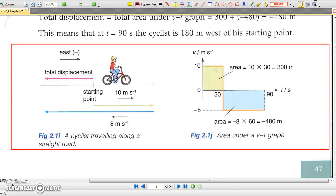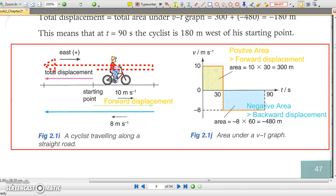If, on the other hand, the velocity is positive sometimes and negative sometimes, the area under the time axis should be taken as negative. In figure 2.1i, the cyclist goes right first and then goes left. The first displacement is positive, which points to the right, and the second displacement is negative, which points to the left.